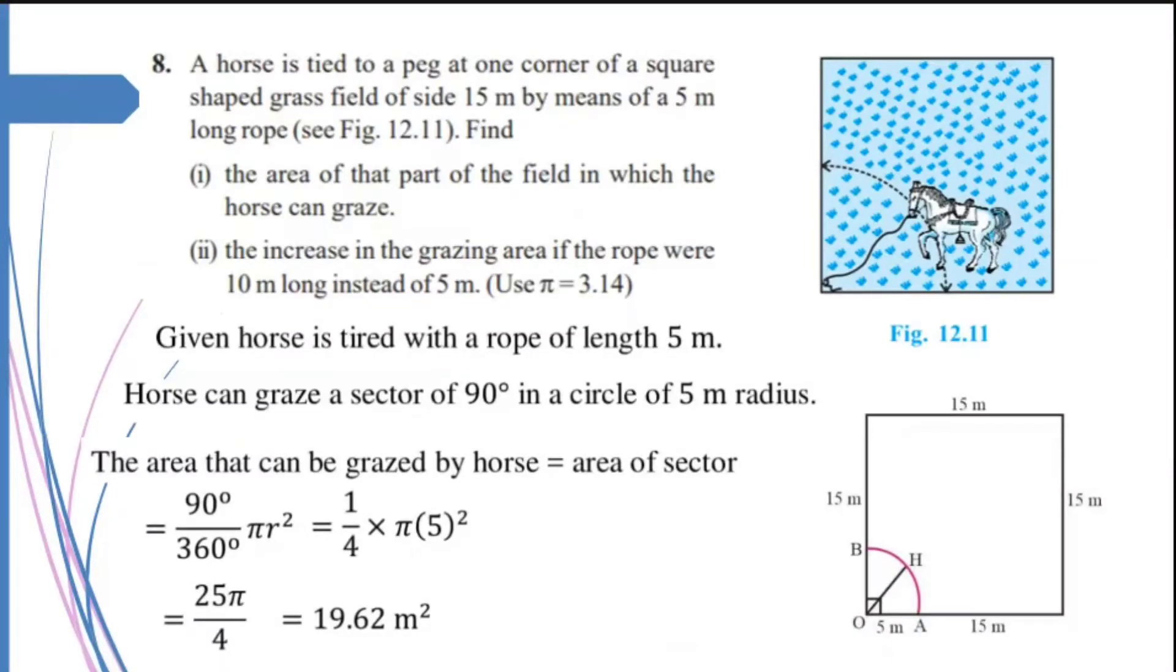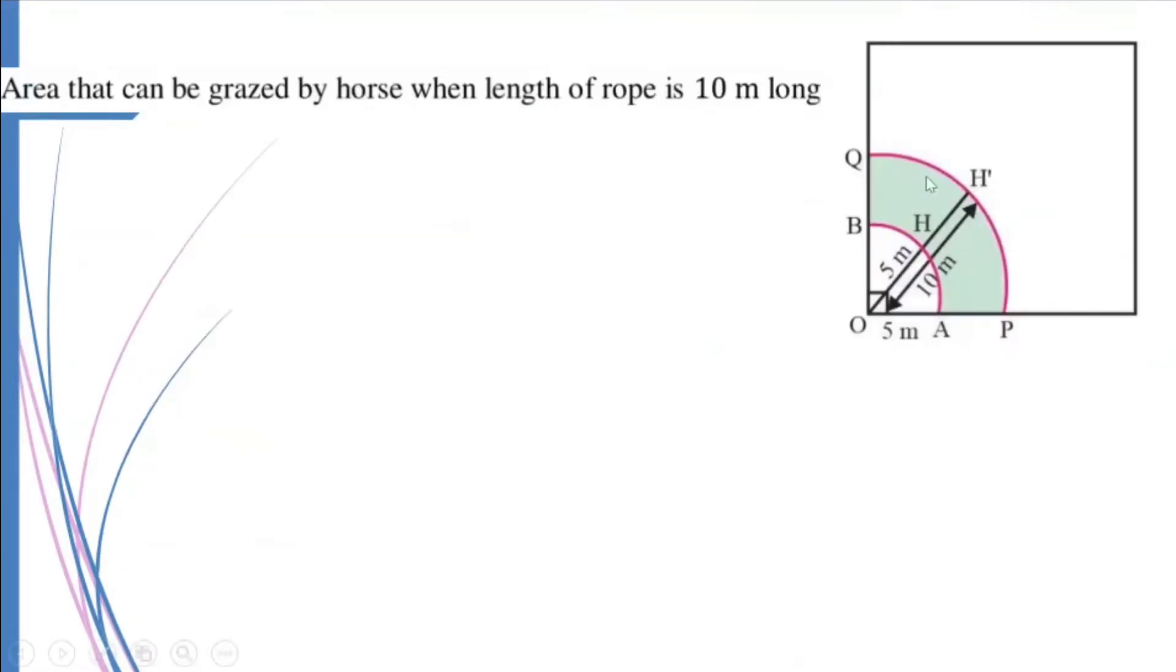Now let us see if the length of the rope is increased to 10 meters instead of 5 meters, what will be the increase in the area? Earlier, only this portion was the area the horse can graze, but now when the length of the rope is increased to 10 meters, the area that can be grazed by the horse now will be equal to this area, this bigger sector now. So what will be the increase in the area the horse will be able to graze? Let us write down.